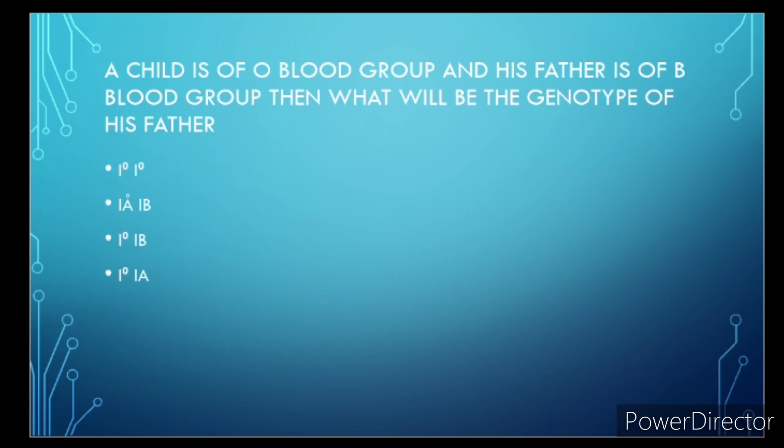A child is of O blood group and his father is of B blood group, then what will be the genotype of his father? The correct answer is option C.